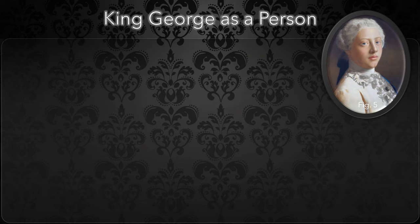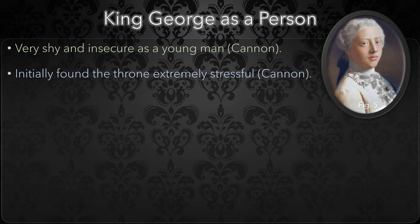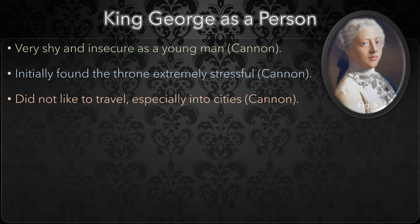So that was some hopefully interesting information about what happened during King George's reign, but what was King George like as a person? Well, as a young man, George relied heavily on his tutor, Lord Butte. Professor John Cannon says, quote, "He was shy and unsure of himself, outshone by his younger brother Edward, and, with no father to advise him, painfully dependent upon Butte's good opinion." After only five years as King, George found the pressures so great that he hinted at abdicating the throne. King George was most at home in his country estate in Windsor. He preferred not to travel to London if at all possible, although considering sanitary waste management techniques around the turn of the 17th century, I can't say I blame him.